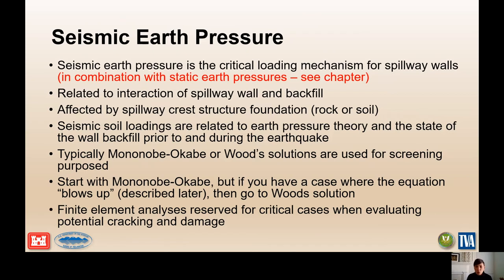The Mononobe-Okabe method is a pseudo-static approach to calculate earth pressures induced by earthquakes. One key assumption is that the wall is able to yield laterally to fully enable active and passive pressures; the amount of movement required to mobilize these pressures can be significant, especially on the passive side, and those values are included in the best practices chapter. The method is based on Coulomb's wedge theory of static lateral earth pressures and was originally developed for gravity walls retaining cohesionless backfill materials, and it has generally been the most commonly used approach for seismically induced lateral earth pressures.